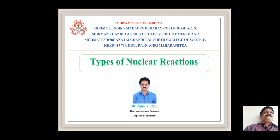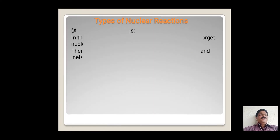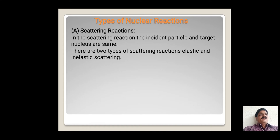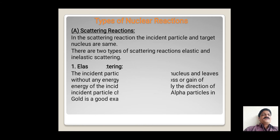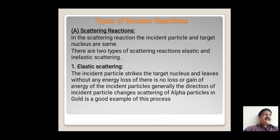Now there are various types of nuclear reactions we can study in this presentation. The first type of nuclear reaction is the scattering reaction. In the scattering reaction, the incident particle and target nucleus are the same. Scattering nuclear reactions divide into two categories: elastic scattering and inelastic scattering.